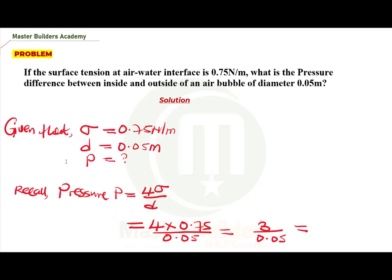And when we divide 3 by 0.05, our final answer becomes 60 Newton per meter squared. This is the pressure. So the pressure we have for this very question is 60 Newton per meter squared. So this is all about this question.